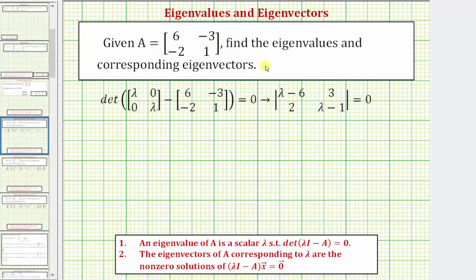We're given matrix A, and we need to find the eigenvalues and the corresponding eigenvectors. An eigenvalue of A is a scalar lambda such that the determinant of lambda I minus A equals zero, so we need to solve this equation for lambda to find the eigenvalues. The eigenvectors of A corresponding to lambda are the nonzero solutions of this equation, which we'll be solving for vector x.